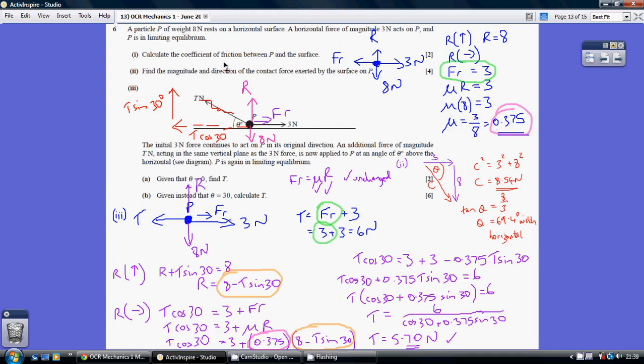Now for part 2, find the magnitude and direction of the contact force exerted by the surface on P. We have our 3 newtons force going horizontally, our weight of 8 going downwards. Using Pythagoras, this gives us the contact force: C squared equals 3 squared plus 8 squared, which is 8.54.